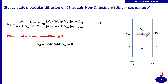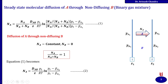Putting this value in the expression, Na / (Na + Nb) becomes 1. When you substitute this into the expression, you obtain N = (Dab / Z) × (Pt / RT) × ln[(Pt − Pa2) / (Pt − Pa1)].